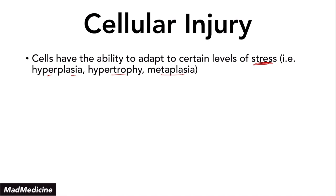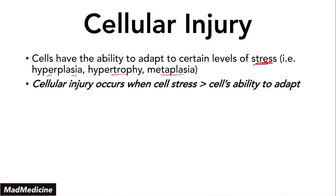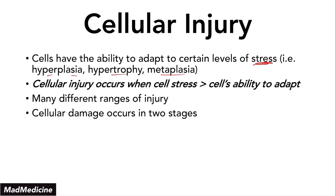Our cells are able to handle a certain amount of stress. When the level of stress far exceeds our cells' ability to adapt to that stress, cells get injured, and that's how cellular injury happens. Now, there are many different ranges of injury, but there are two main stages you need to know. The first one is reversible injury, where you have cellular swelling happening due to blocking the sodium-potassium ATP pumps. When you block this, you're going to have high intracellular sodium concentration leading to cellular swelling.